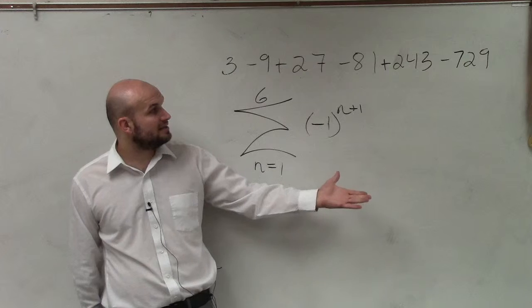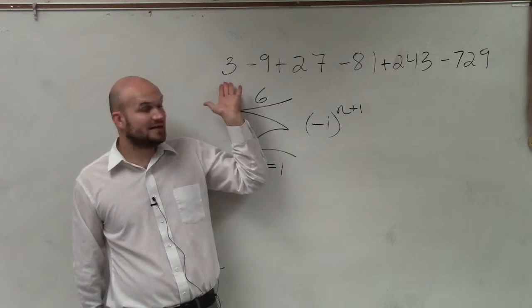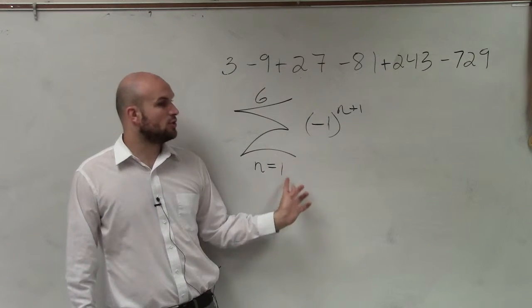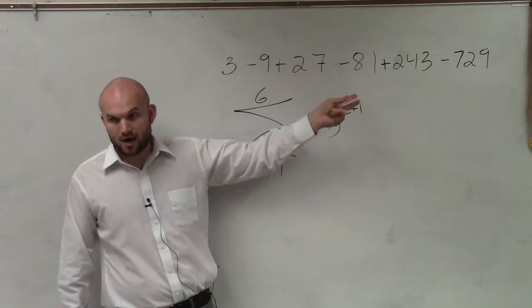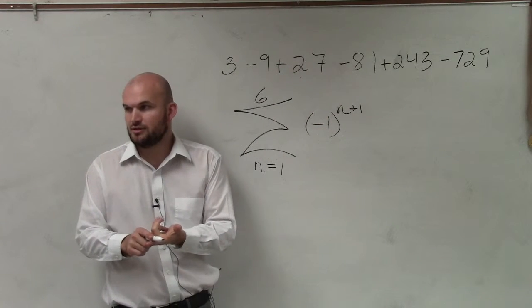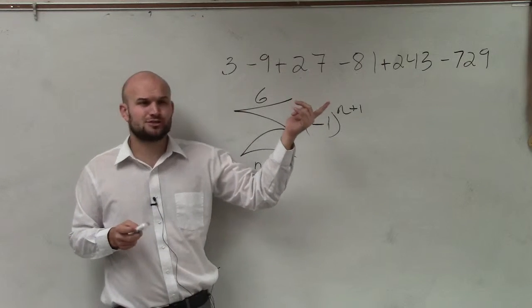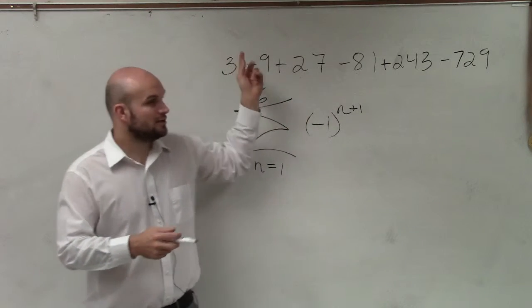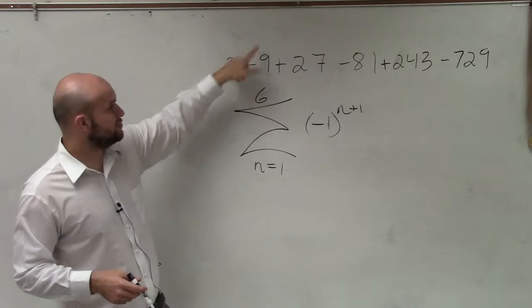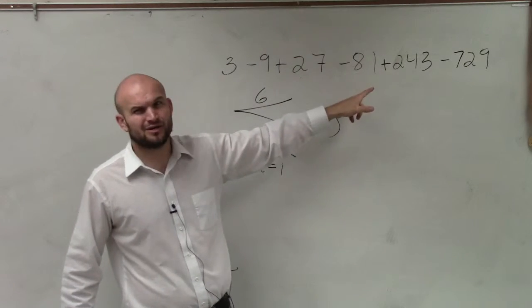So now we need to identify our rule. And looking at these numbers, remember, you're going to plug 1 into a rule and get this out. So the first thing I always look at is addition and subtraction. This looks like it's growing pretty quickly. So I don't think addition and subtraction is going to work, because we're plugging in 1 to get this value, 2 to get that value, 3 to get that value, 4 to get that value.